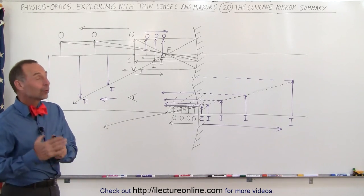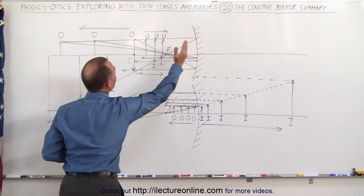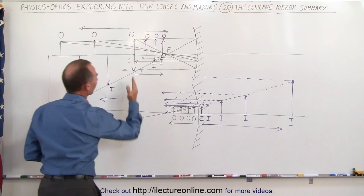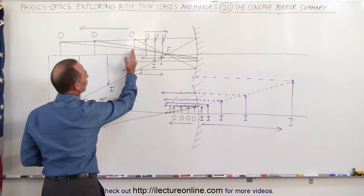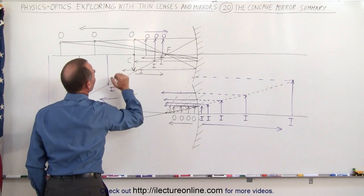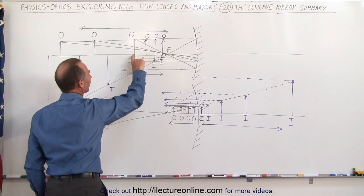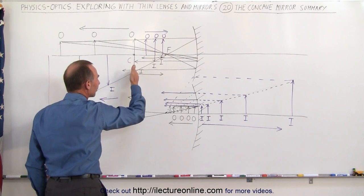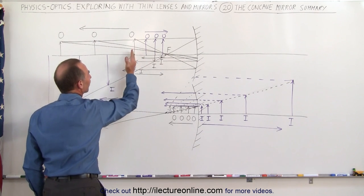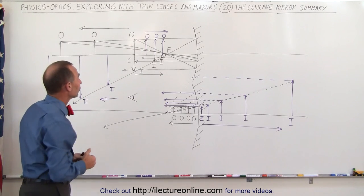First of all, we're going to place the object farther away from the mirror than the focal point. Starting with the distance twice as far away, which is the center of curvature, notice that the image will form at the very same location. It'll be inverted, and it'll be in front of the mirror, which means it's going to be a real image.